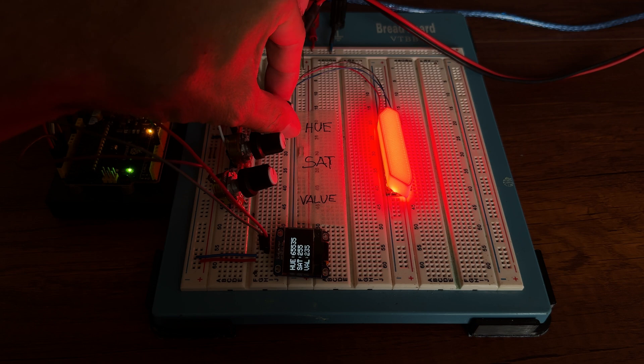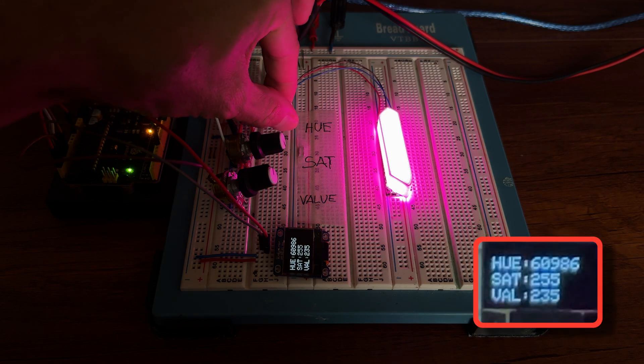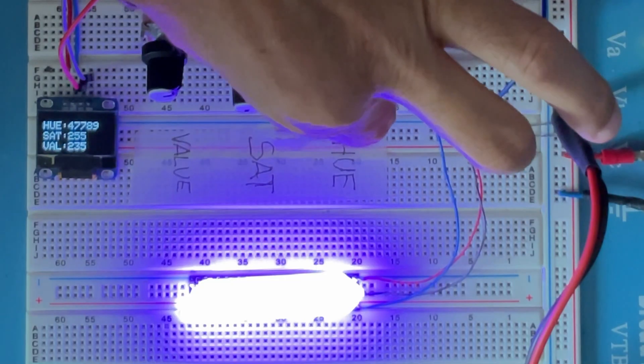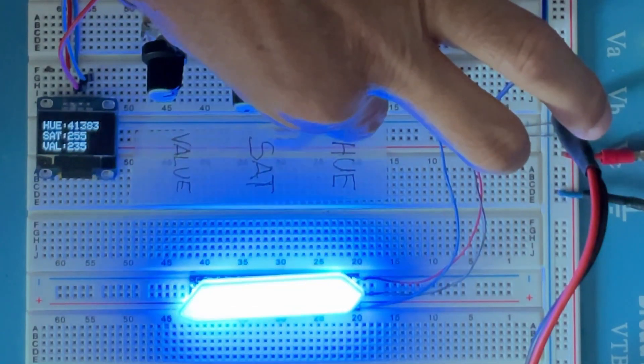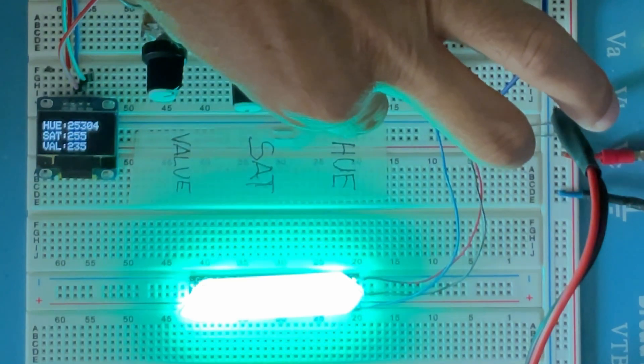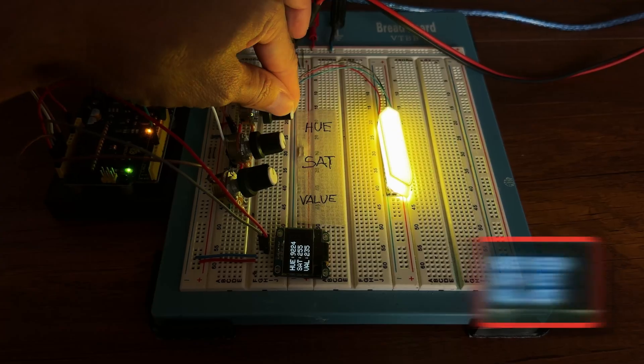We can see in practice how the HSV system works. You can see that when the Hue value changes, the color of the RGB LEDs changes. You can see the entire range of colors available.